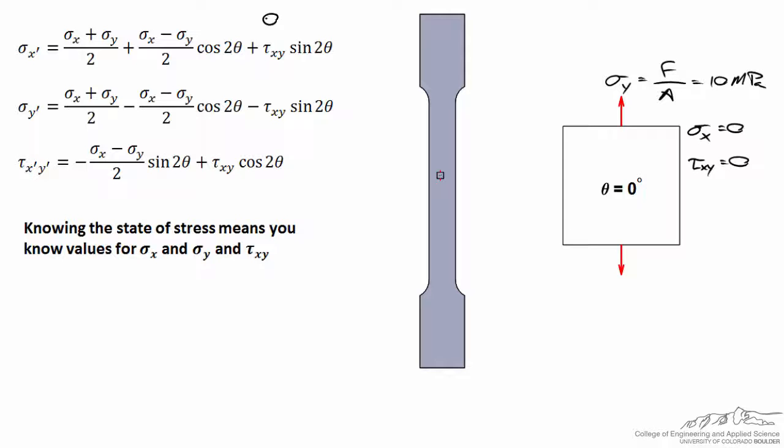Something worth noting about these equations is that if theta is equal to zero, cosine 2theta is equal to 1, and sine 2theta is equal to zero, and these terms will fall out of the equation. We find that sigma_x' is equal to sigma_x, sigma_y' is equal to sigma_y, and the shear stress tau_x'y' is equal to tau_xy, of course if we haven't rotated the element.